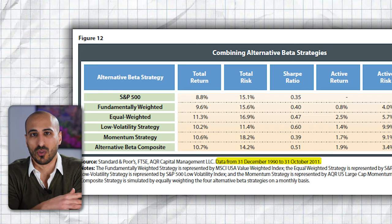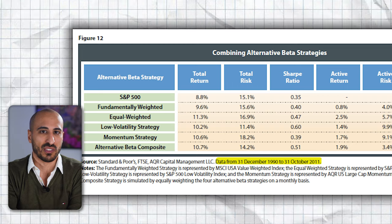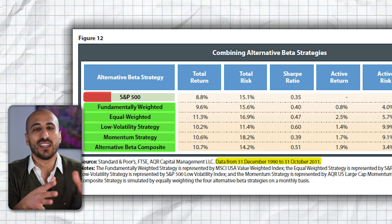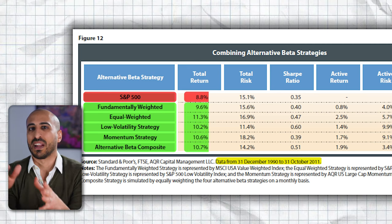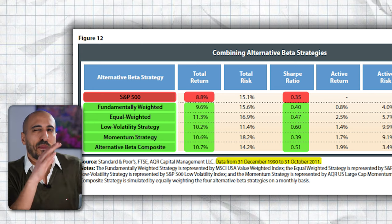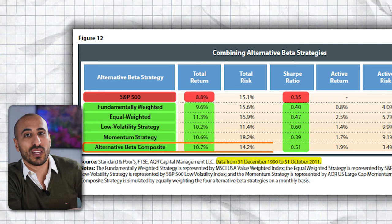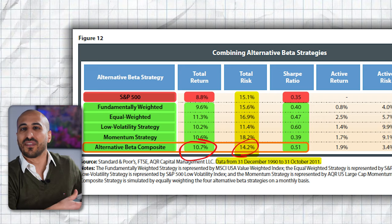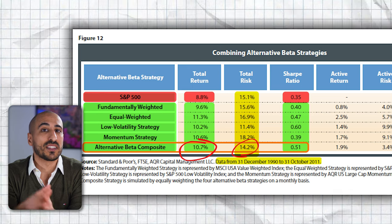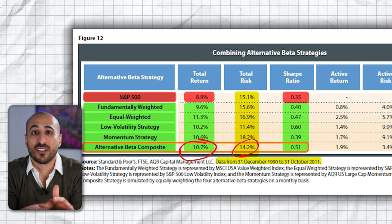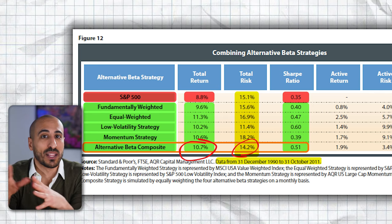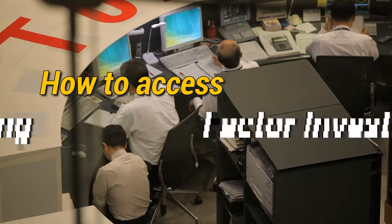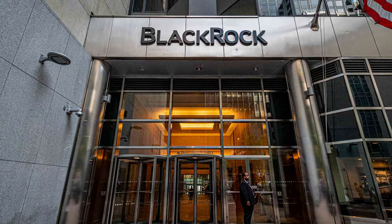A table from Standard & Poor's shows stock market data between 1990 and 2011, comparing various single-factor strategies with the S&P 500. Over this period, each factor strategy individually outperformed the S&P 500 both on an absolute basis and on a risk-adjusted basis using the Sharpe ratio. But the best result is achieved by combining all four strategies into a single portfolio — not only does it outperform the market, it does so with less risk, because these factors are not correlated with each other.